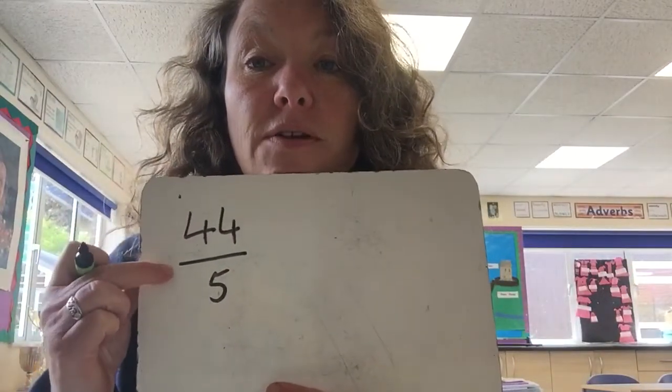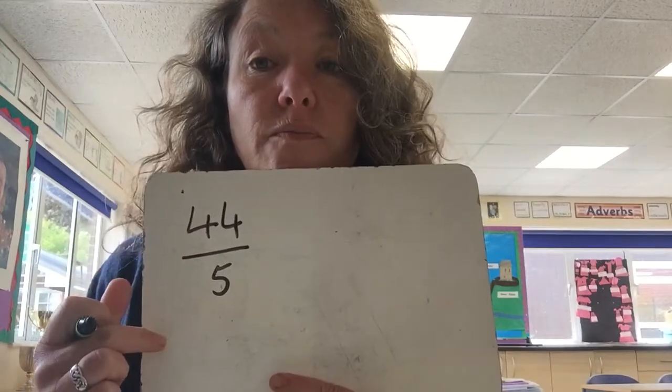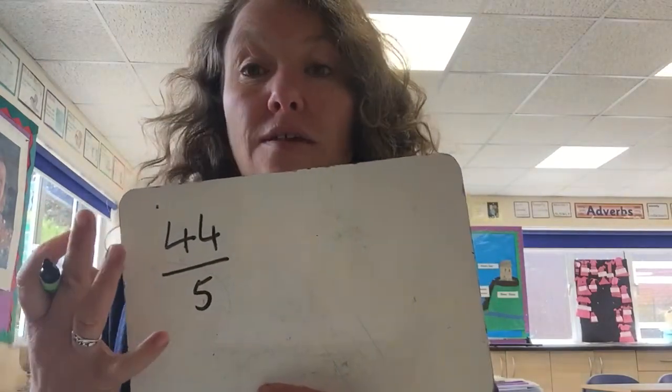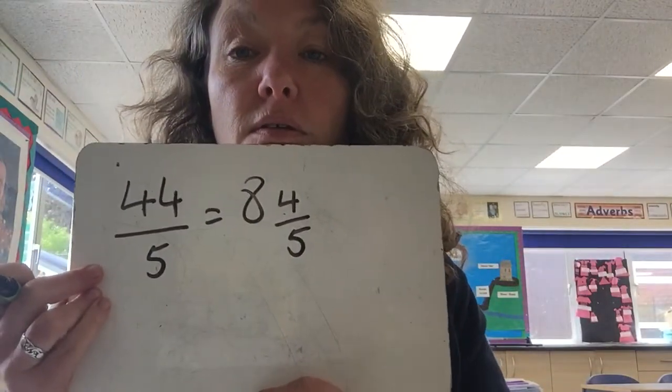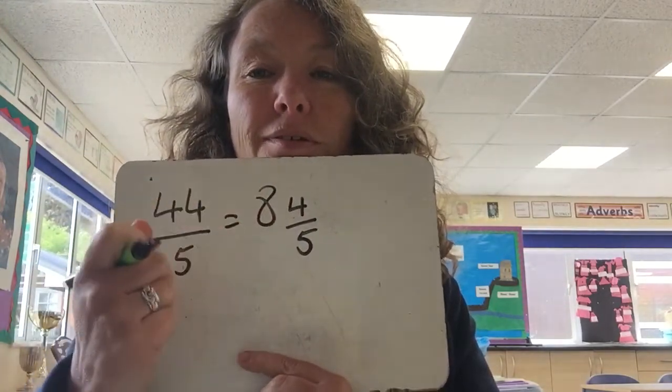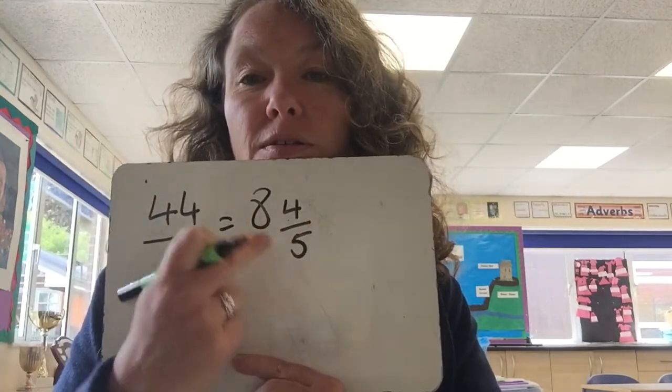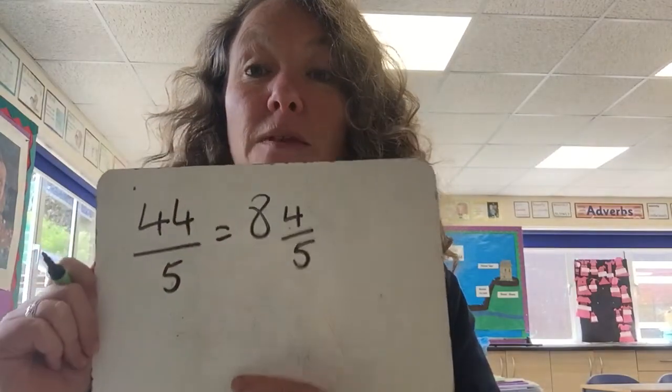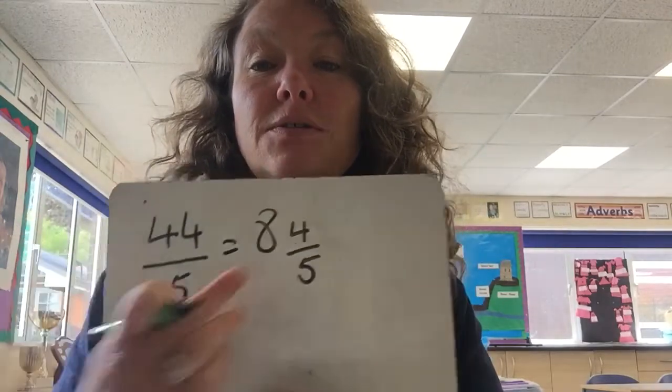Okay, let's do one more to make sure. Let's do 44 fifths. We're looking at 44 divided by five — fives into 44. Fives into 44 goes eight, since five-eights is 40. So we've got eight whole ones, and then we've got four left over. So that means it's eight and four-fifths. When you write your answers, try and make sure that your fractions are smaller than your whole numbers, otherwise it looks like 84 fifths — it needs to be eight and four-fifths. That is converting top-heavy or improper fractions into mixed numbers.